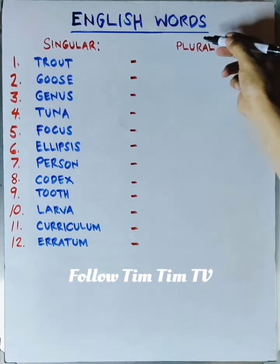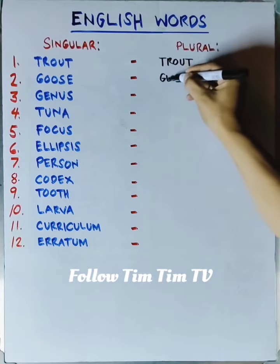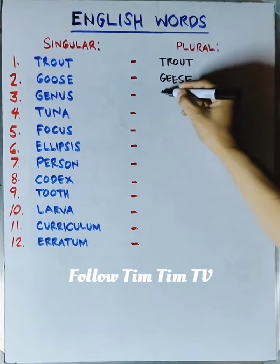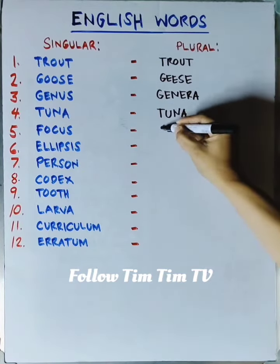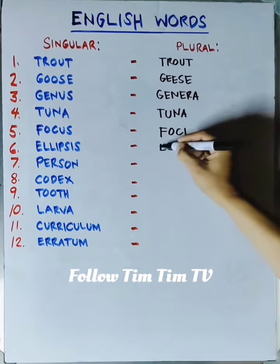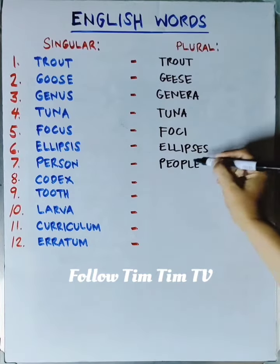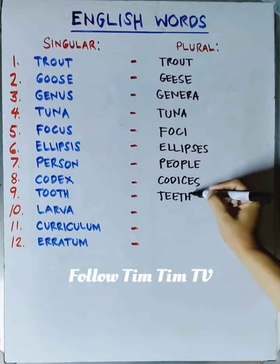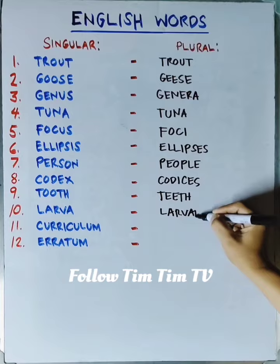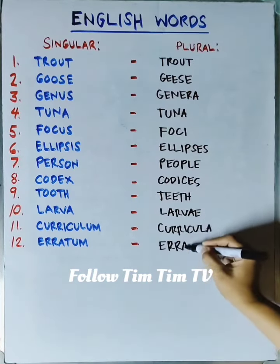English words, singular to plural. Trout is trout. Goose is geese. Genus is genera. Tuna is tuna. Focus is foci. Ellipsis is ellipses. Person is people. Codex is codices. Tooth is teeth. Larva is larva. Curriculum is curricula. Erratum is errata. Share this video and follow TimTimTV for more.